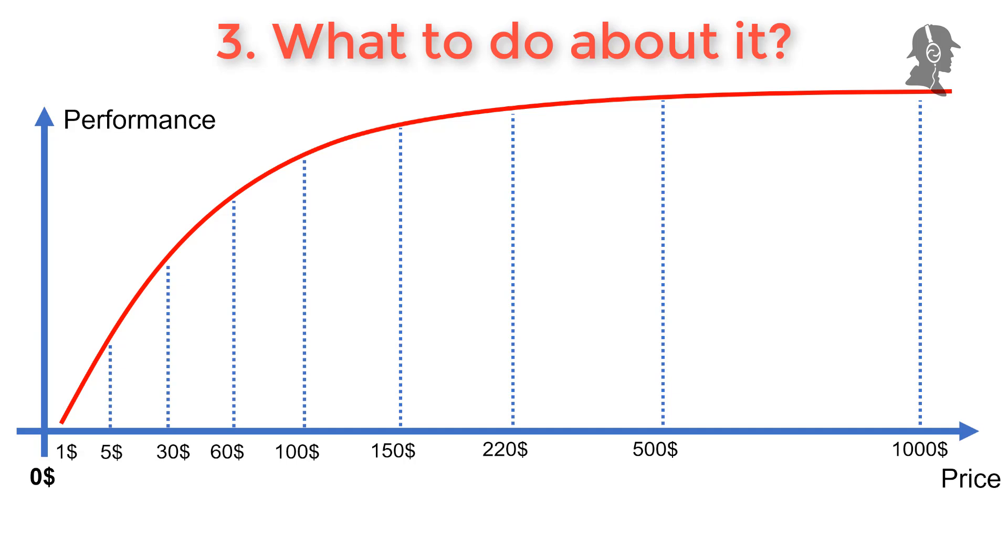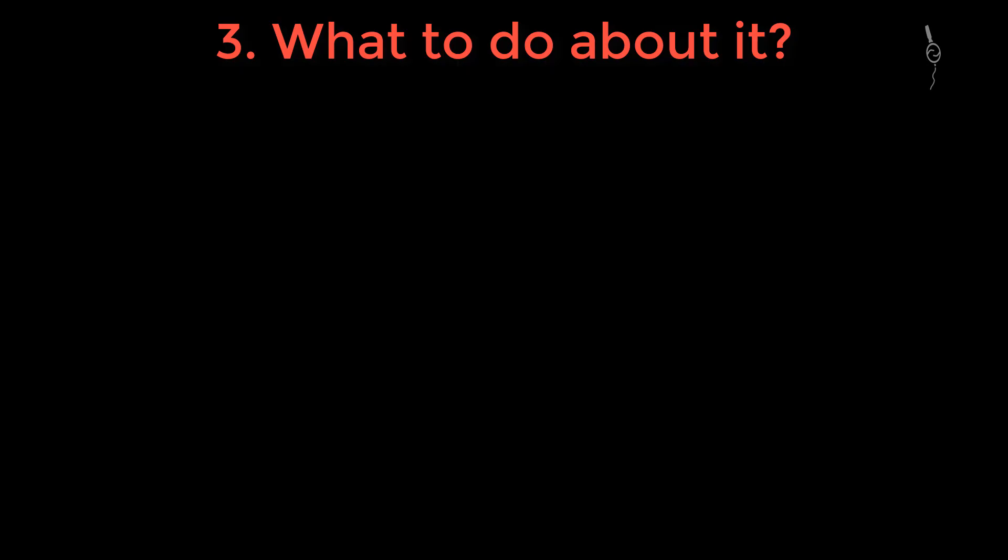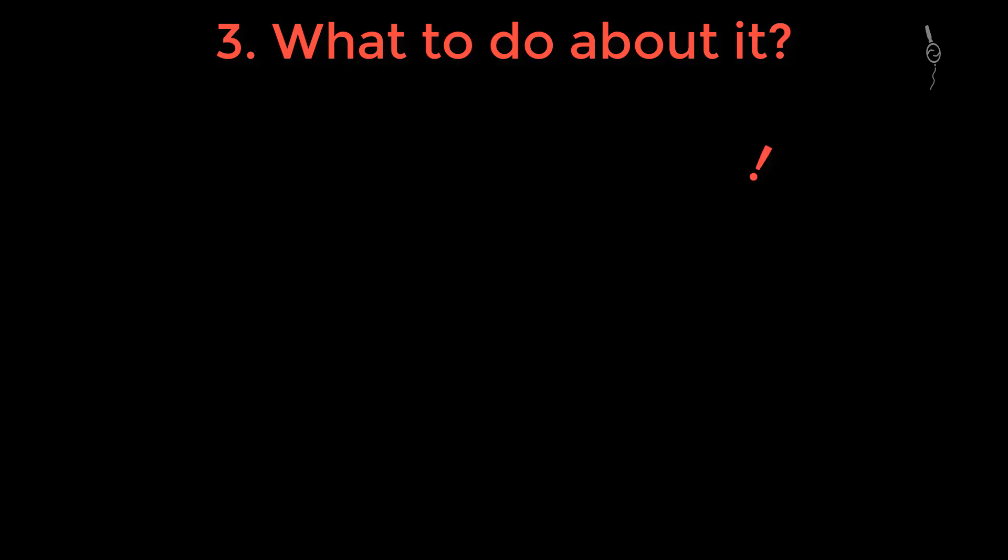So, we've established where diminishing returns are, we know why it's important, but what do we do? First and foremost, and most importantly, it's very important, know what you actually want and what you need. Know your use case. Know what you really want to have.